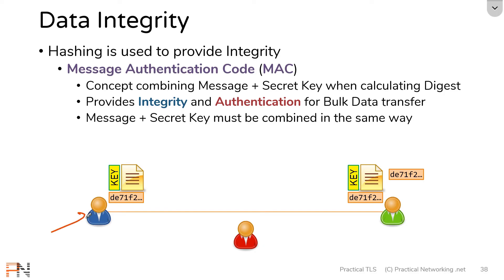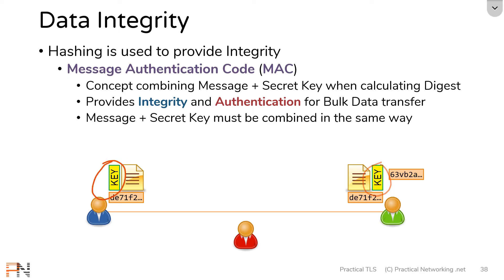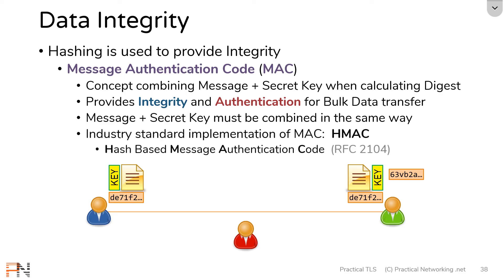For instance, notice the sender here combined the key plus the message. Well, what if the receiver had instead combined the message with the key? That's going to produce a different digest. And even though it is the correct message and the correct key, since these digests are not the same, the receiver will never accept any messages. So not only do both parties have to agree upon the same key, they also have to agree upon the same way of combining the message with the key. The industry standard for how to implement a specific MAC — how to combine a message with a key — is called the HMAC, the hash-based message authentication code, and there's an RFC which specifies exactly how to combine the key with the message.